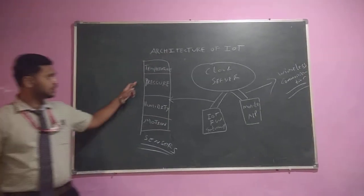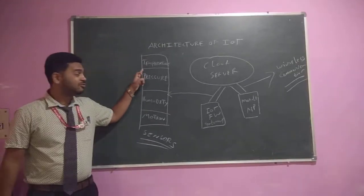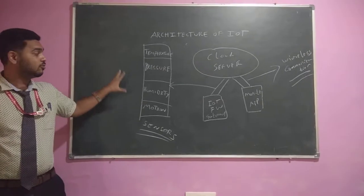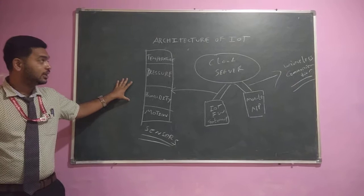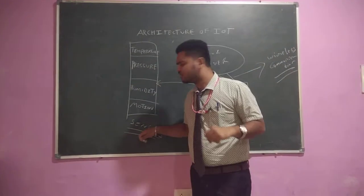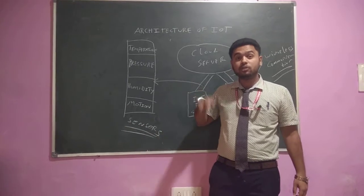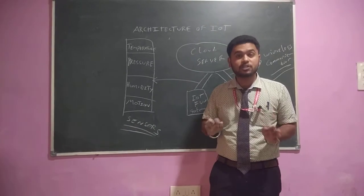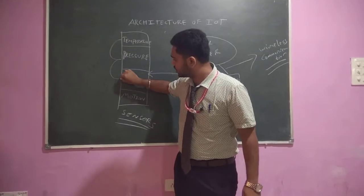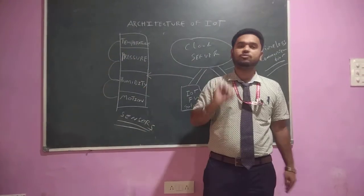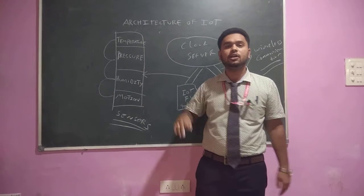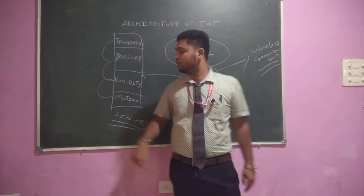These are the four parameters which are very important in the design and working of IoT. All the sensors we use in daily life are very dependent upon these parameters only, because without these parameters no sensor will work in a systematic way.